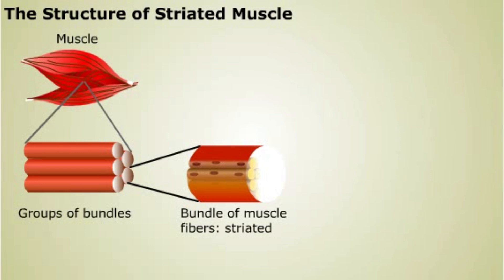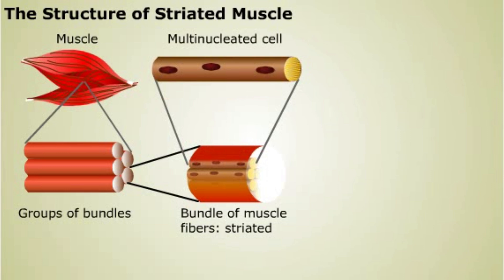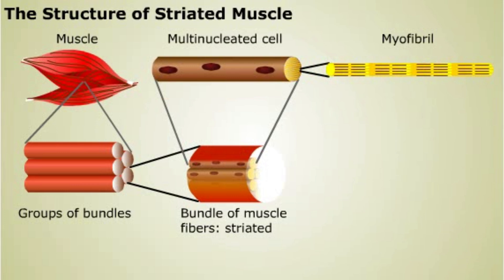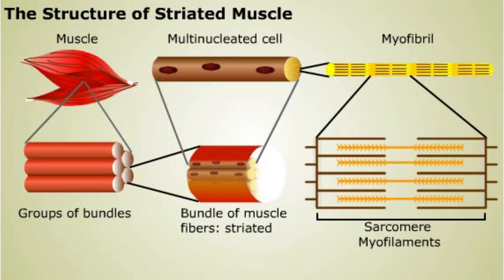Both skeletal and cardiac muscle are striated muscles. A whole muscle is composed of bundles of muscle fibers. Each fiber is a single, multinucleated cell. Each cell is made up of bundles of myofibrils composed of thin and thick filaments. The myofilaments are arranged into repeated functional units called sarcomeres.